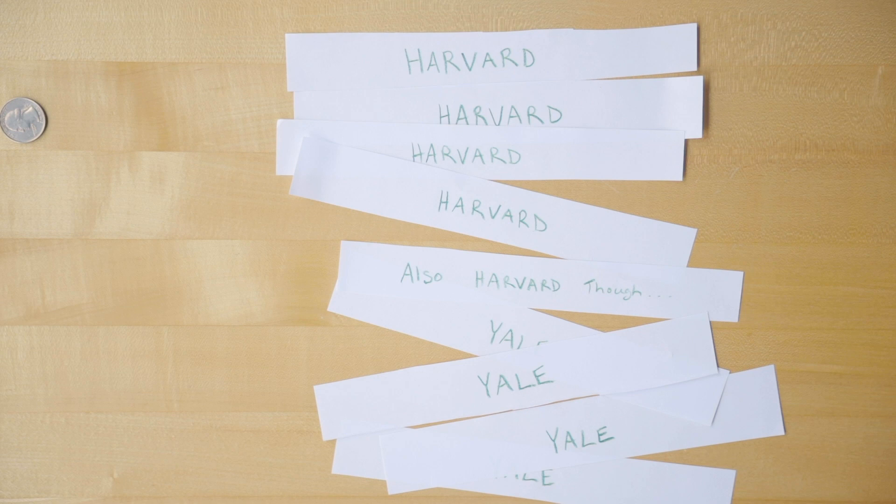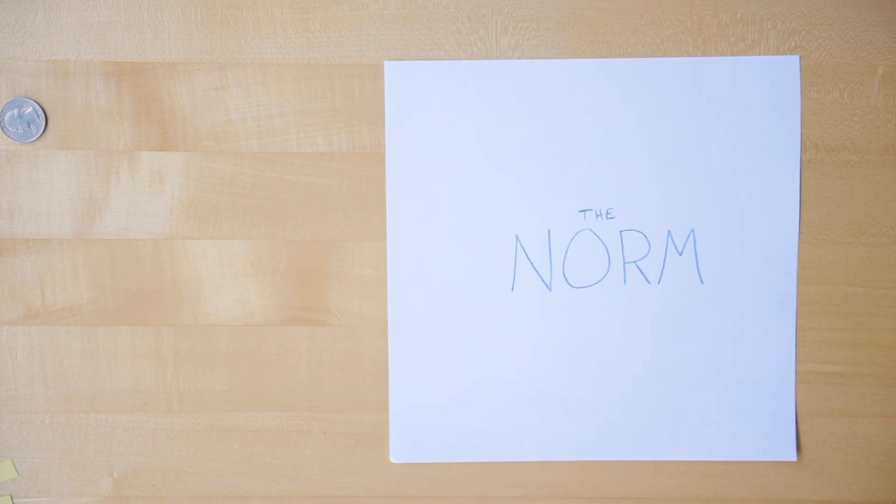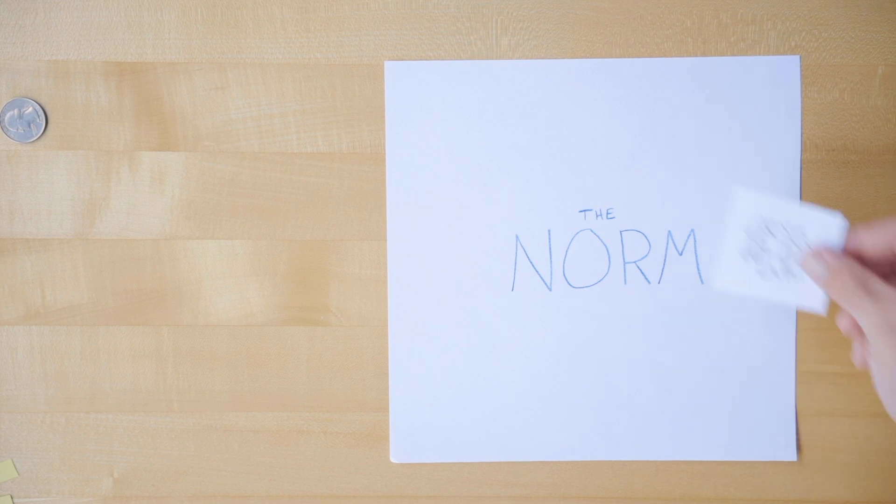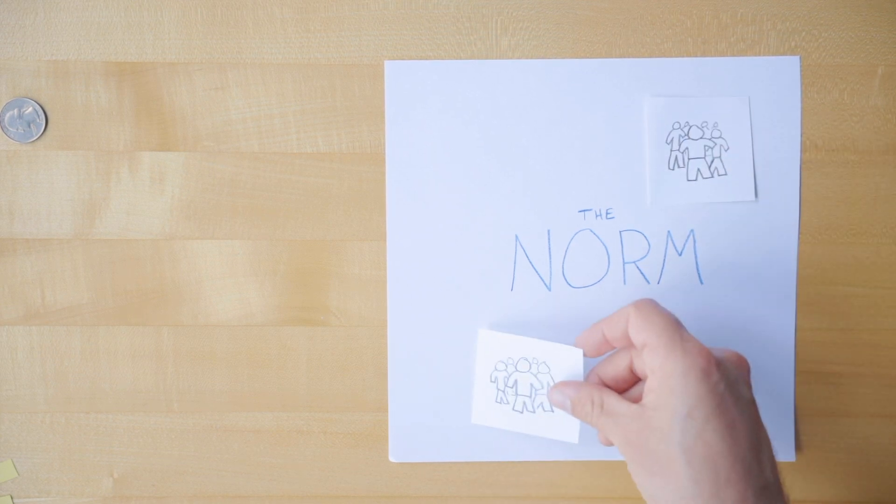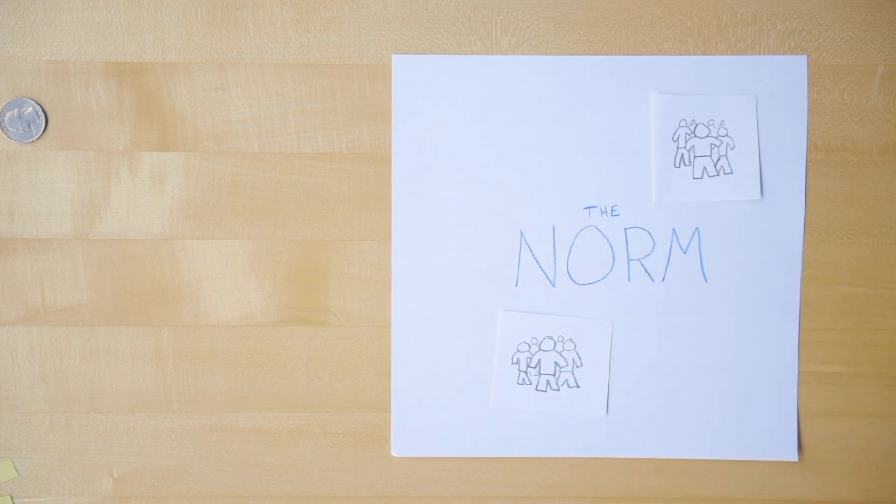Likewise, over 200 of our current members of Congress graduated from law schools. This matters because for the past 250 American years, it's elites like these who have been defining and enforcing the societal norms that the average American must live under.